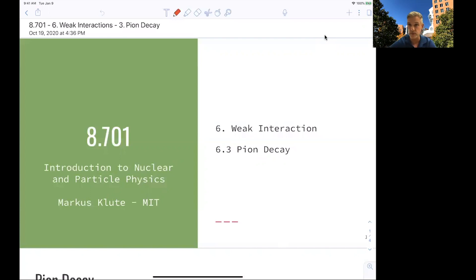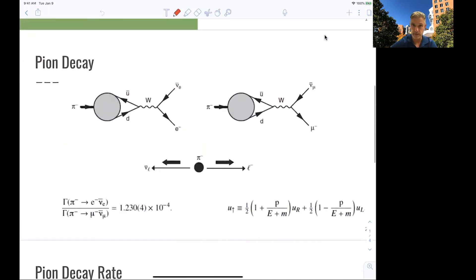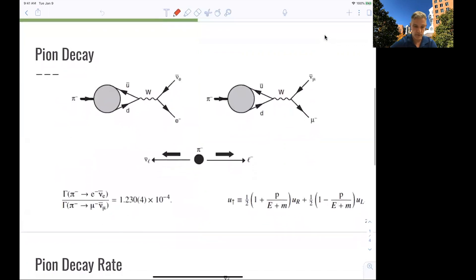Decay of the pion is specifically interesting. We discussed the decay of the pion before when it came to the discussion of helicity states. Now, let's look at this again with the information we have and what we learned. If you look at the pion decay, two of three leading decay modes are given here. The one is where the pion, in this case a negatively charged pion, decays into an anti-electron neutrino and an electron, or via the W, into a muon and an anti-muon neutrino.